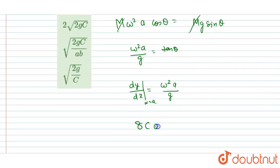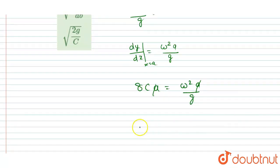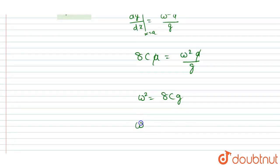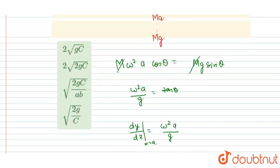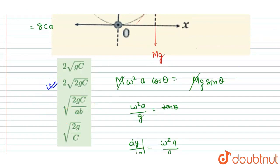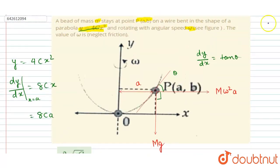Substituting into our equation: omega²·a / g = 8ca. The a cancels out, giving omega² = 8cg. Taking the square root, omega = √(8cg) = 2√(2cg). This is the answer, and option B is correct.